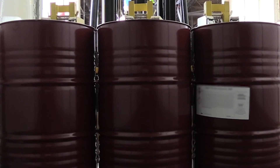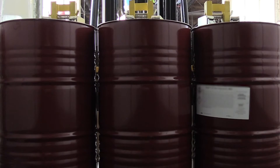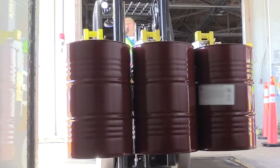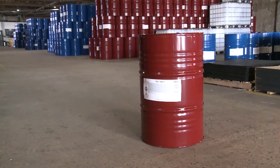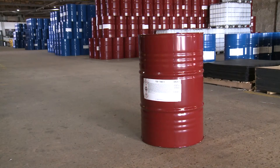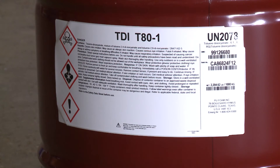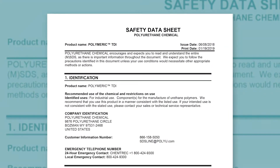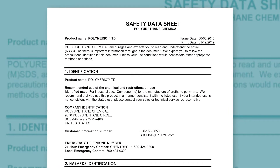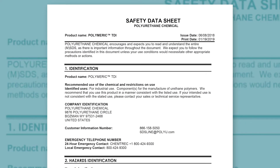Eliminating exposure at the source will prevent these potential health effects. As with other chemical shipments, hazard communication information is typically attached to containers either by a warning label or tag. If additional handling information for TDI is required, please refer to the manufacturer's safety data sheet.